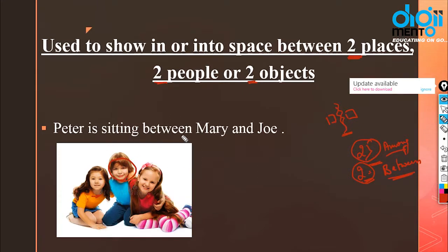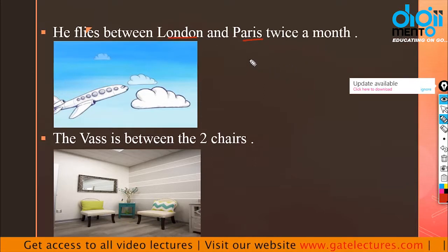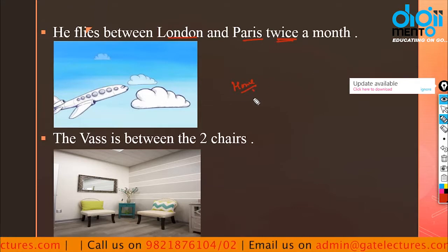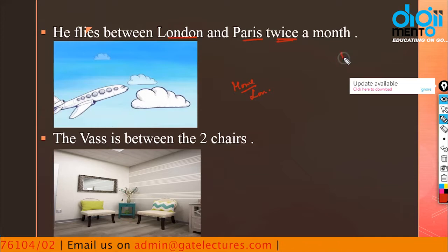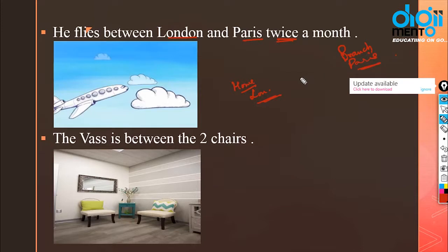For example: Peter is sitting between Mary and Joe. He flies between London and Paris twice a month — here we are talking about two places, London and Paris. The next example: the vase is between the two chairs.